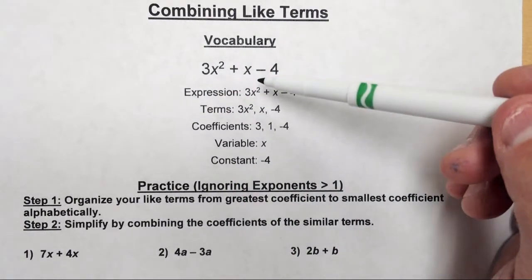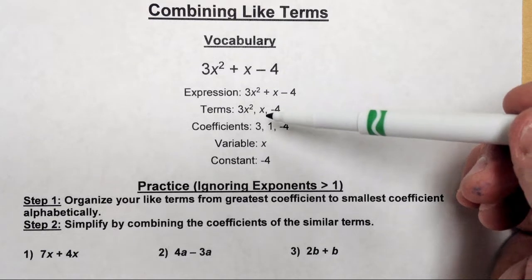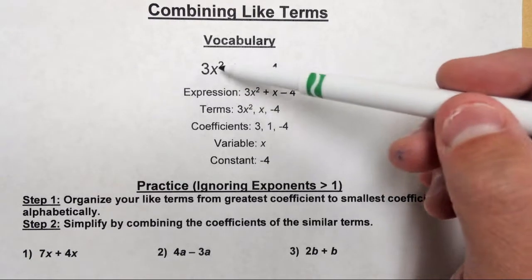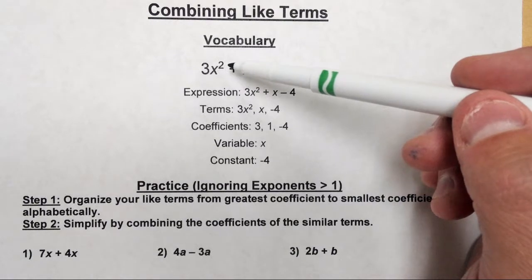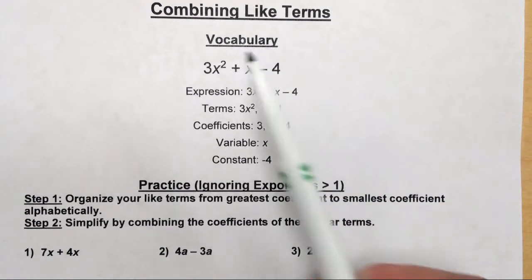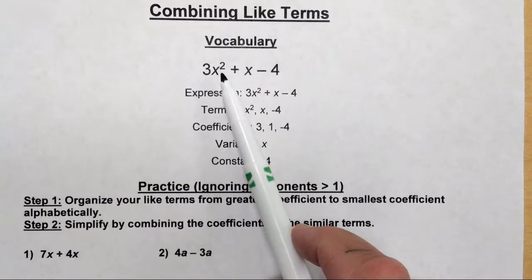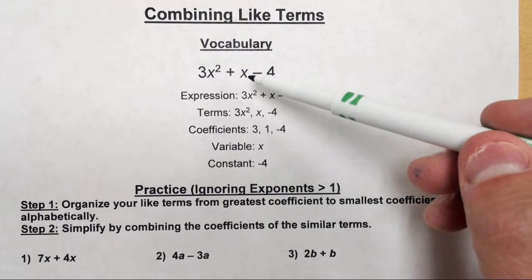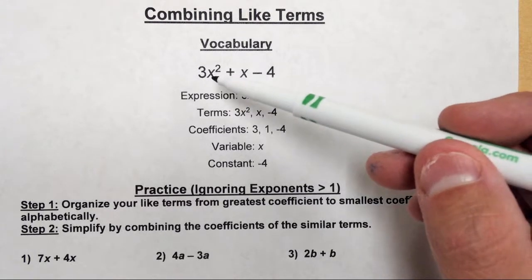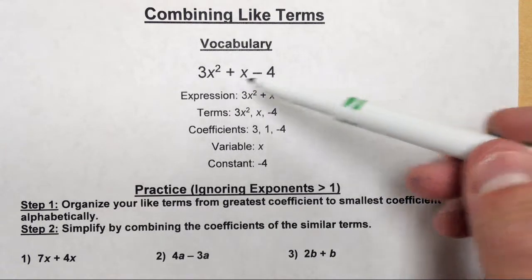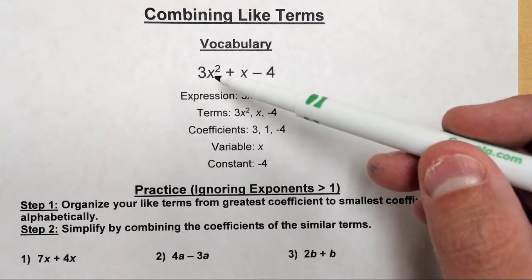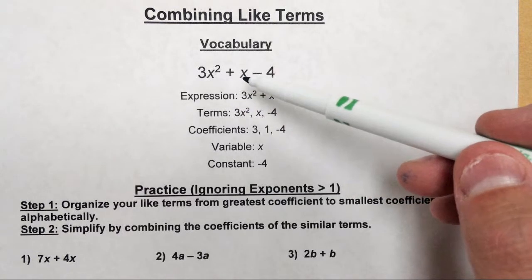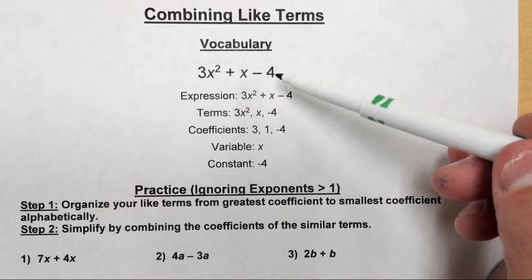This particular expression has three terms. A term is basically a grouping of letters and variables that have a different number, or different variables and exponents. Like we have x squared here, this is an x, and then there's no x. So these terms are different because this is the only one that has an x squared, this is the only one that has an x, and this one doesn't have a variable at all.